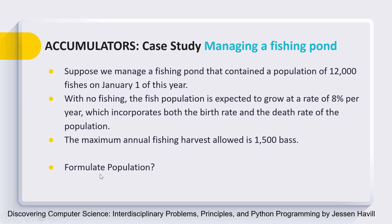We wish to find out the year number at which the population will die out. Based on these requirements, we have to write a Python program which can find out the population in the pond after each year and highlight the year at which the population just becomes negative. Can you formulate the formula for the population of this particular pond?